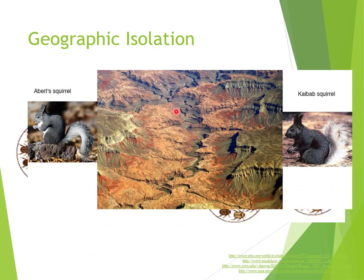One example is the Grand Canyon. Before it formed, there was an ancestral species of squirrel that gave rise to two species. Before the Grand Canyon was formed, this ancestral squirrel lived throughout the area. When the Colorado River came through and cut the land in half, they couldn't cross to reproduce — they were geographically isolated. Natural selection favored certain traits in each population. Scientists have placed these two squirrels together in a lab and they can no longer reproduce. They're now considered two different species of squirrel.